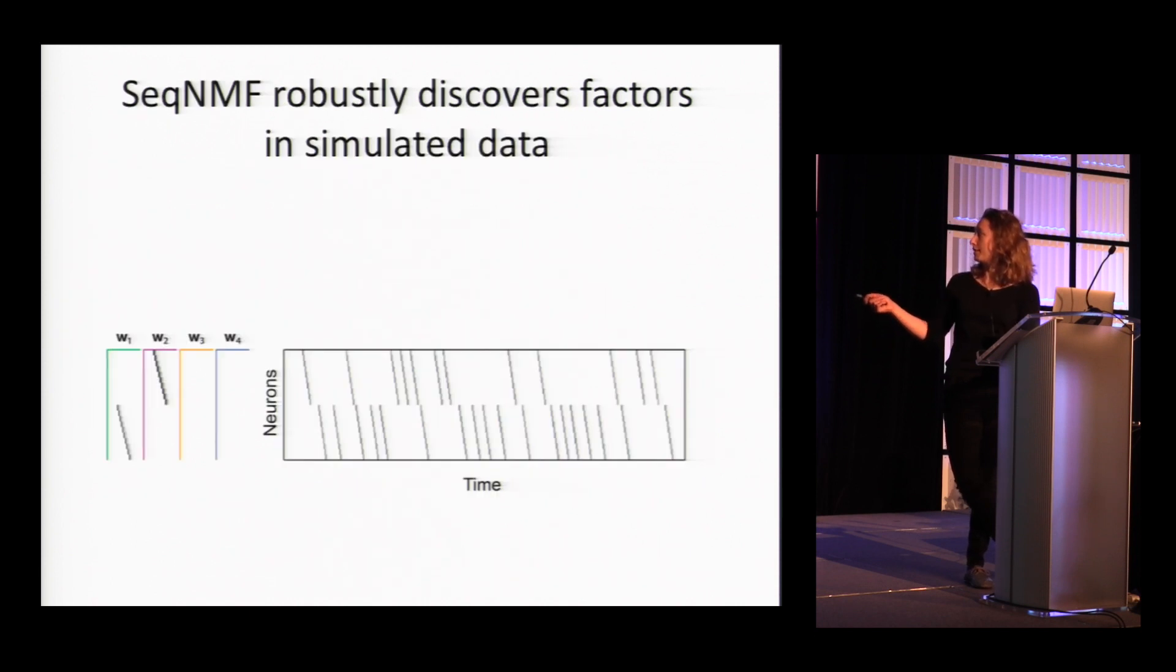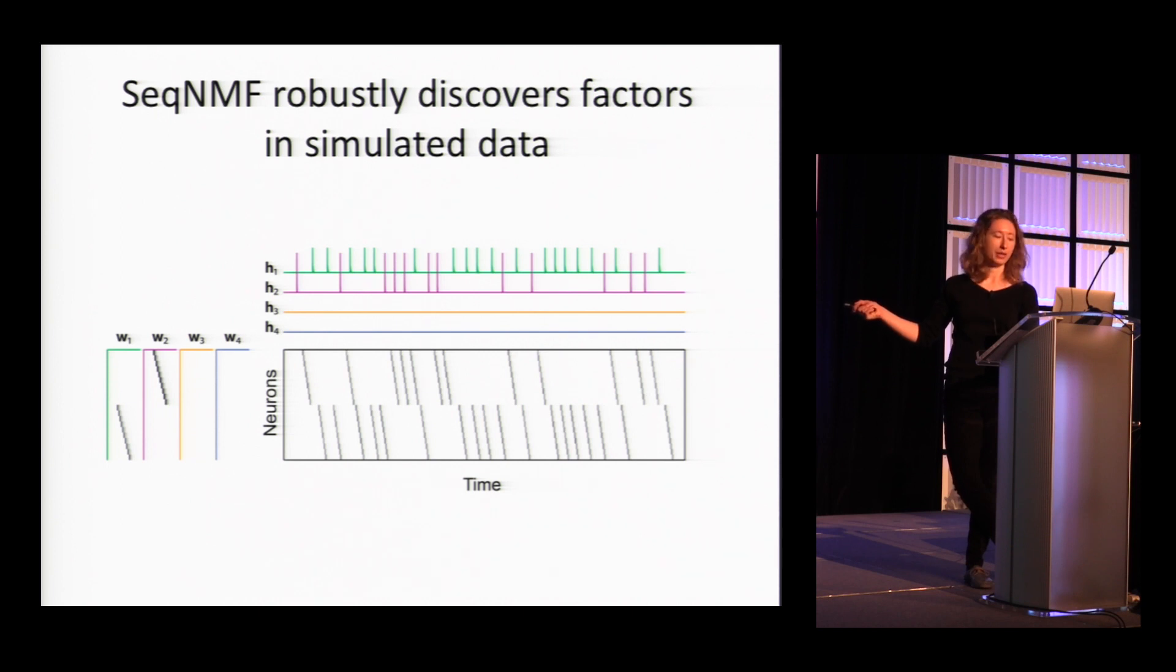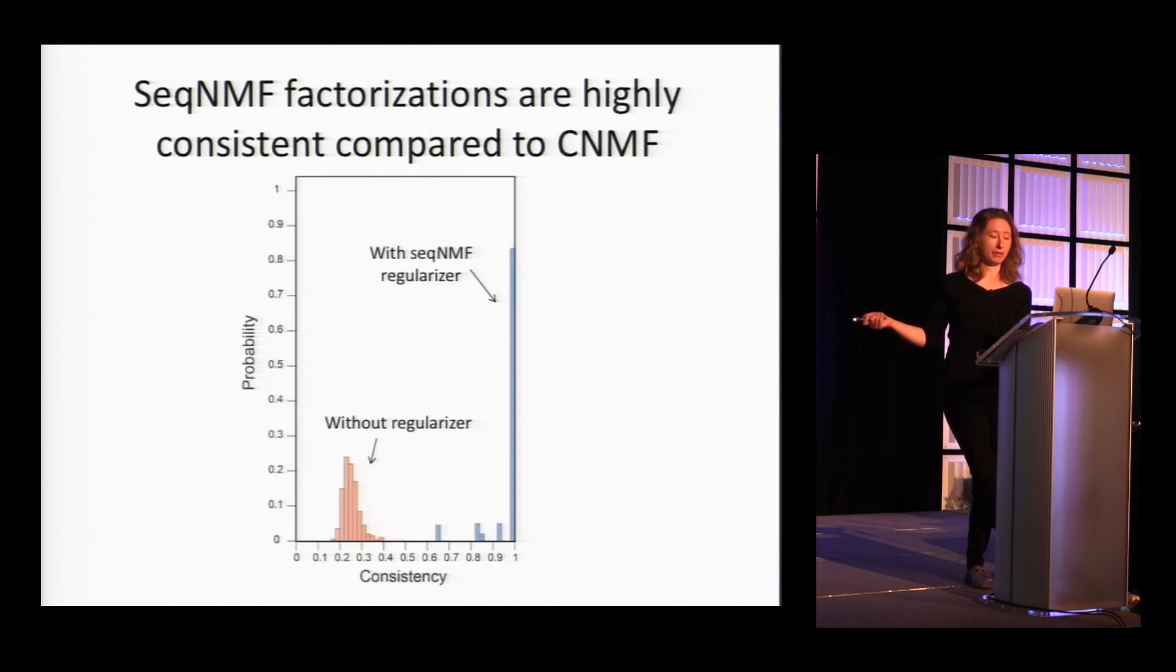Here's an example of simulated data, neurons by time with two different sequences that happen at different times. We're able to extract two different patterns and when those patterns occurred. And we consistently get this answer each time we run it.